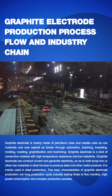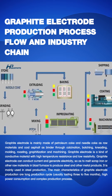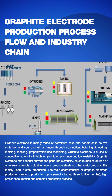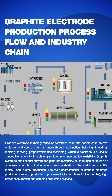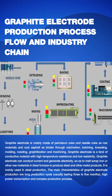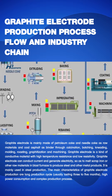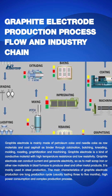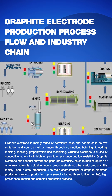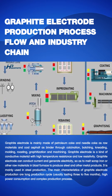The main characteristics of graphite electrode production are a long production cycle, usually lasting 3 to 5 months, high power consumption, and a complex production process.